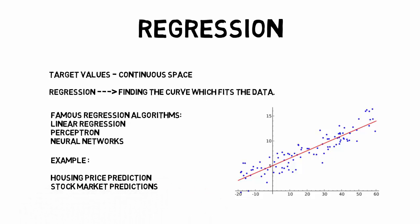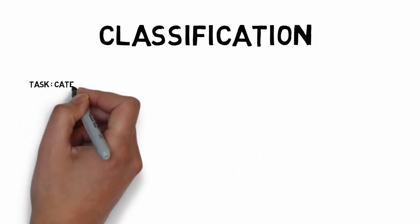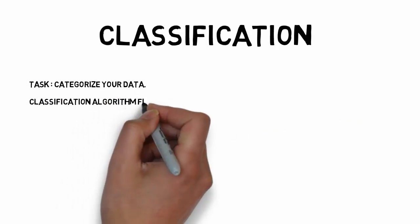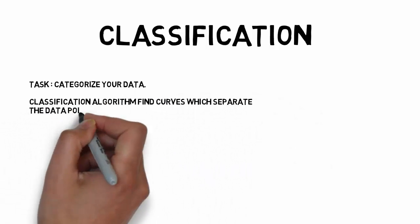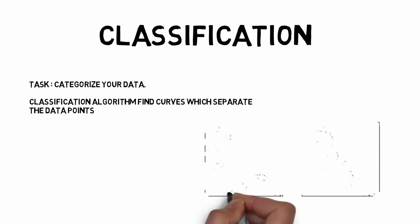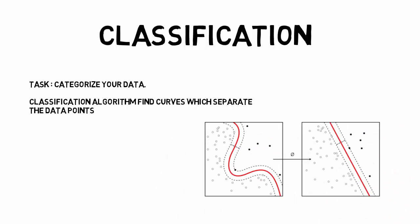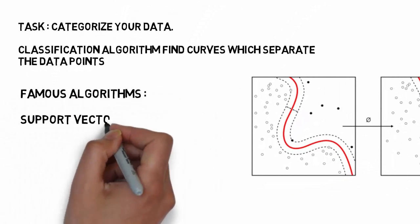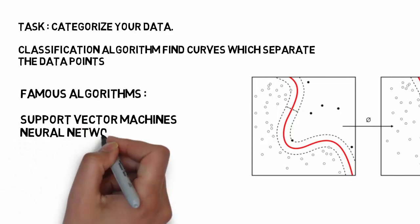If you want to find which category your data belongs to, then it is a classification problem. The classification algorithm mostly finds curves which separate the data points into different categories. Labeling sentiment on Twitter as positive or negative is a classification problem.